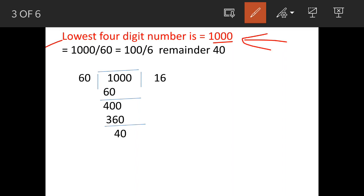So when we divide 1000 by 60, we are going to have a remainder of 40. So that means if we increase 1000 by the difference of these two numbers, that is 60 minus 40 equals 20, there is going to be no remainder.